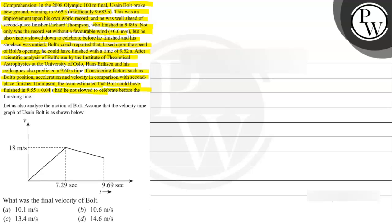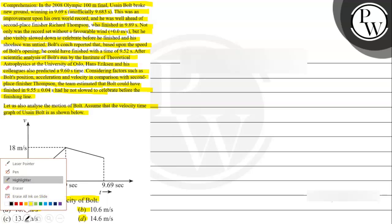The team estimated that Bolt could have finished in 9.55 plus minus 0.04 seconds had he not slowed to celebrate before the finishing line. Let us analyze the motion of Bolt. Assume that the velocity time graph of Usain Bolt is as shown below. What was the final velocity of Bolt? Whether it is option A: 10.1 m/s, Option B: 10.6 m/s, Option C: 13.4 m/s, or Option D: 14.6 m/s.